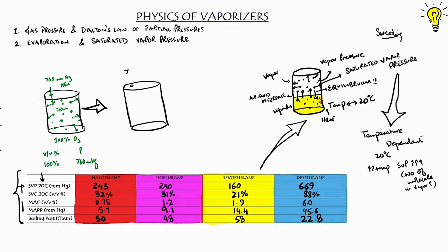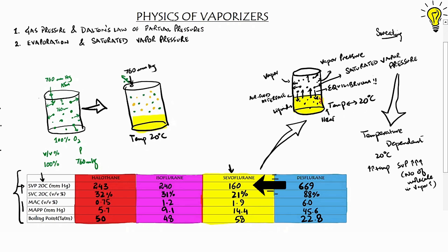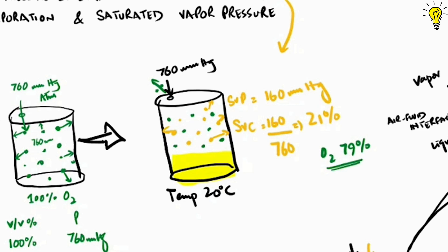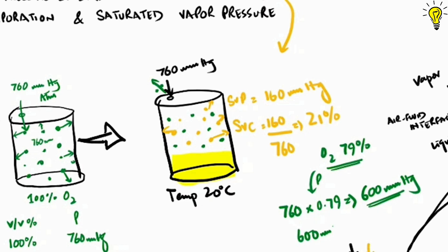Let's place sevoflurane now in the first chamber with oxygen at 20°C. It would generate a saturated vapor pressure of 160 mmHg. In terms of Dalton's law, the partial pressure of sevoflurane is 160 mmHg, so volume-by-volume concentration would be 160 ÷ 760 = 21%. If sevoflurane vapor is exerting 21% pressure, the remaining pressure is exerted by 100% oxygen at around 79%. So partial pressure of oxygen would be 760 × 0.79 = 600 mmHg. So 600 + 160 of sevoflurane gives a total pressure of 760 mmHg — the same as ambient pressure.